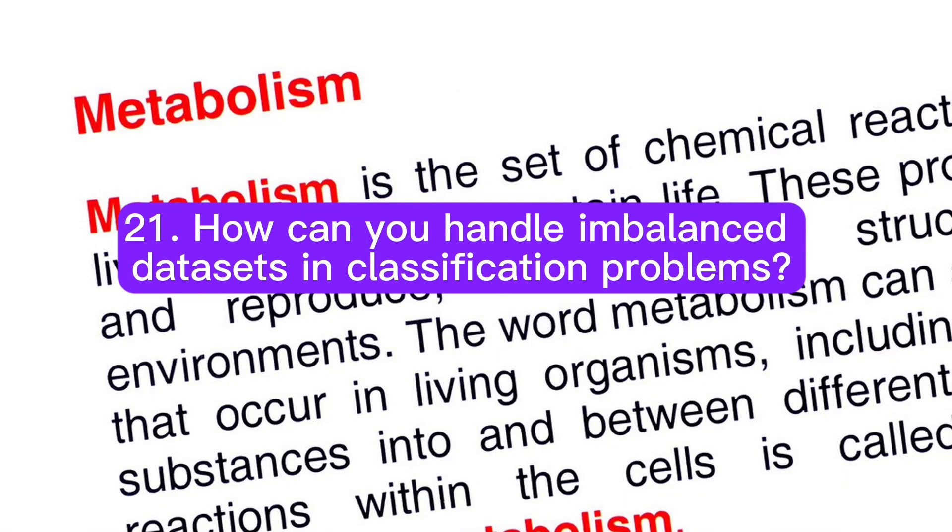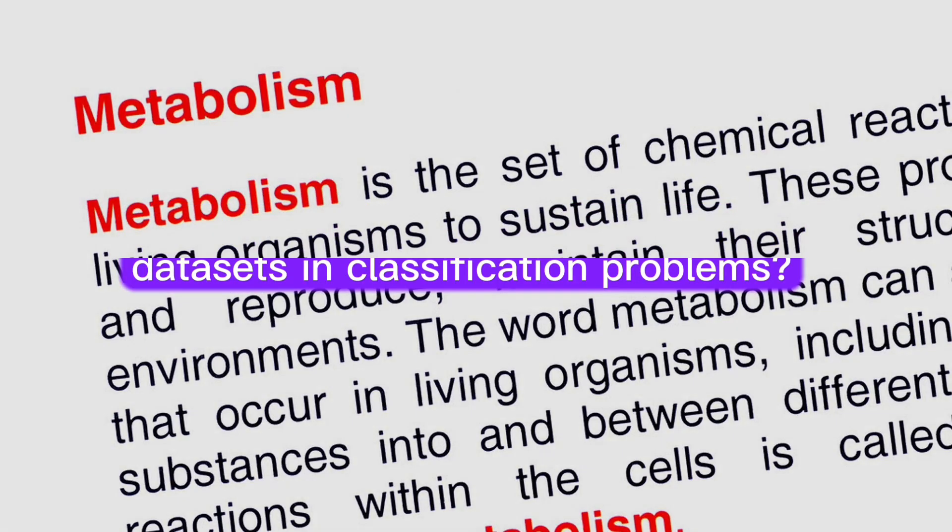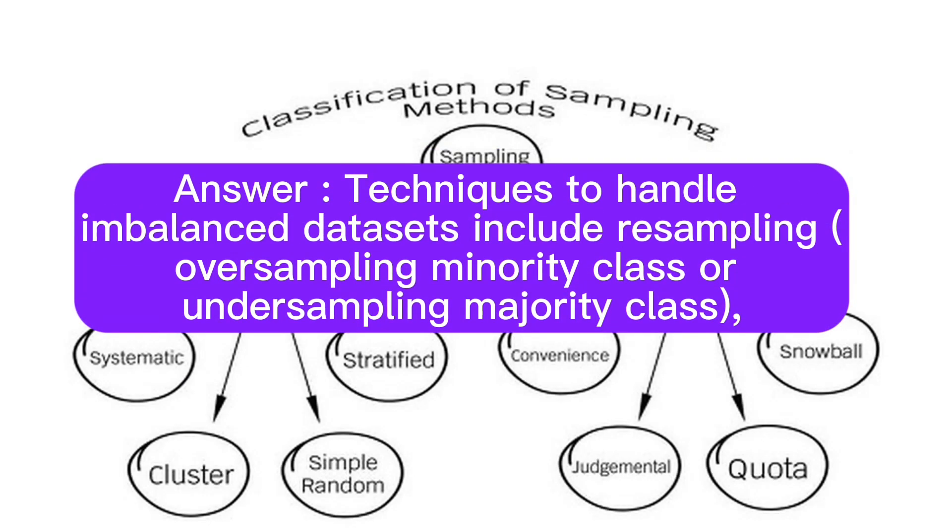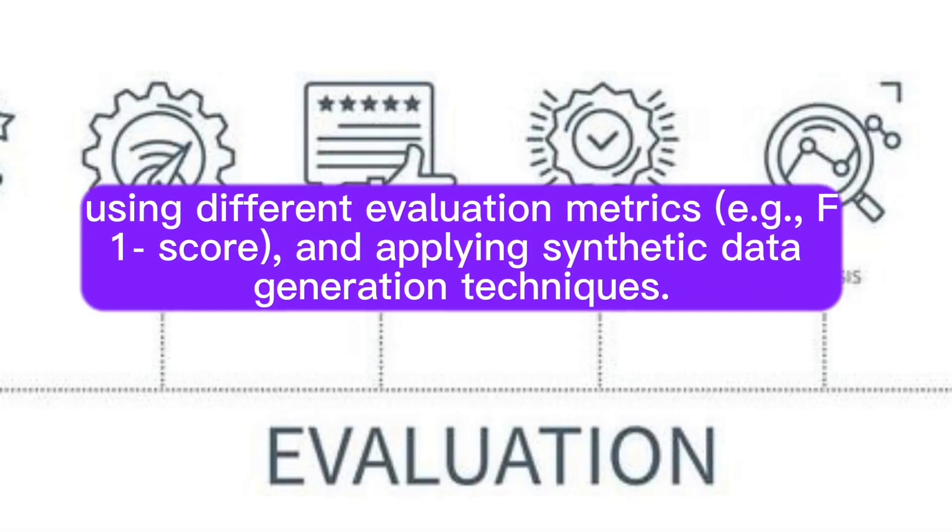Question 21: How can you handle imbalanced datasets in classification problems? Answer: Techniques to handle imbalanced datasets include resampling (oversampling minority class or undersampling majority class), using different evaluation metrics (for example, F1 score), and applying synthetic data generation techniques.